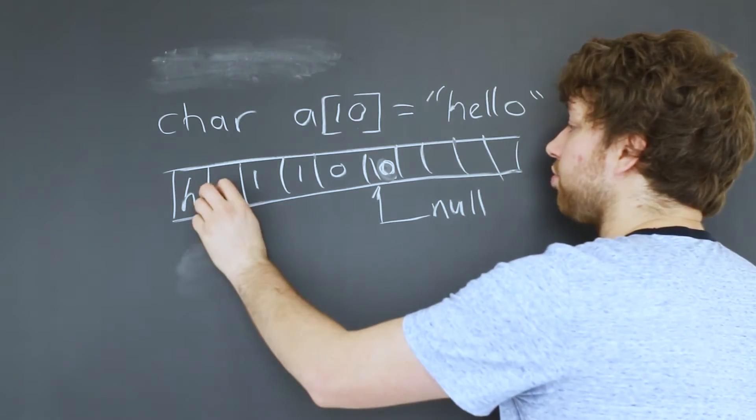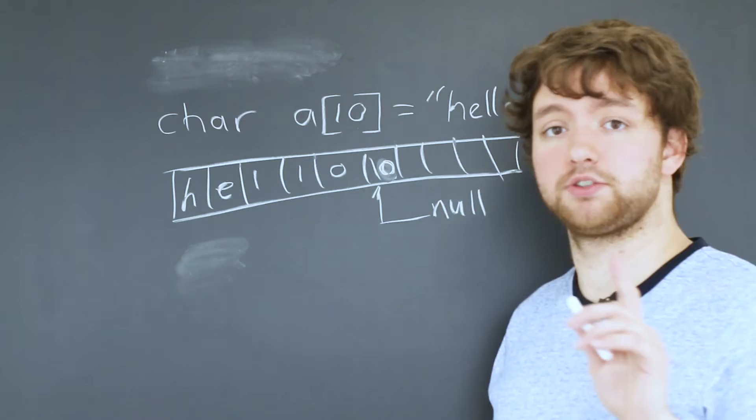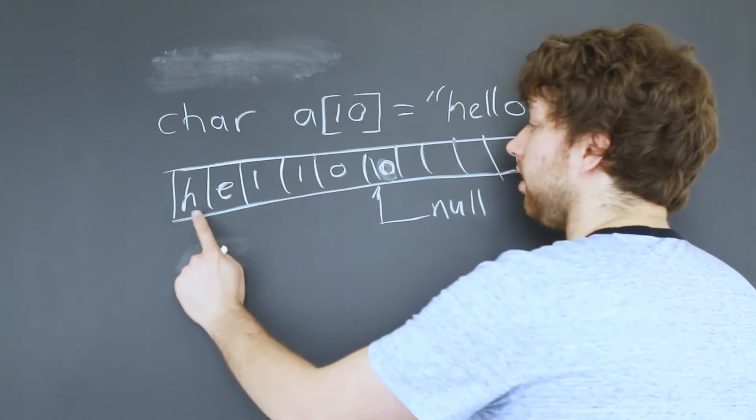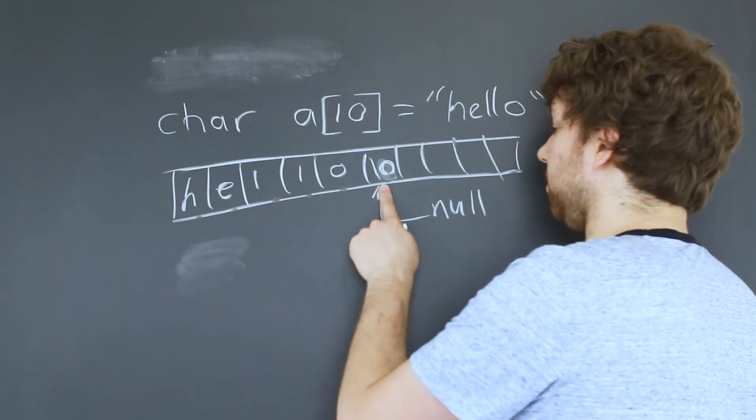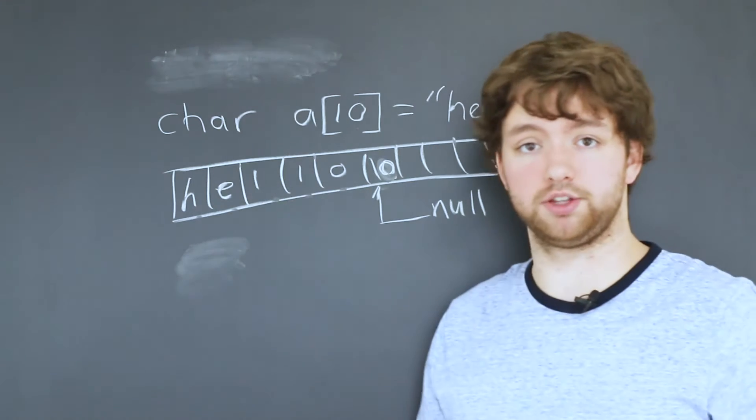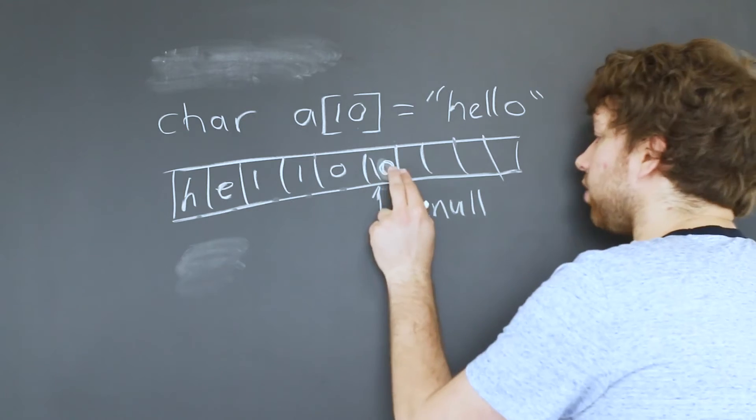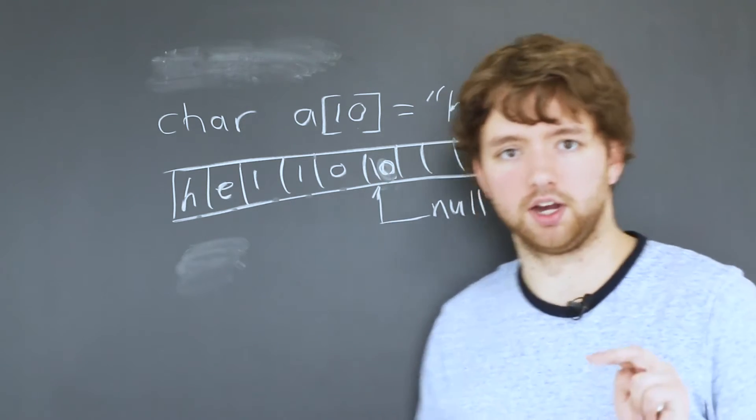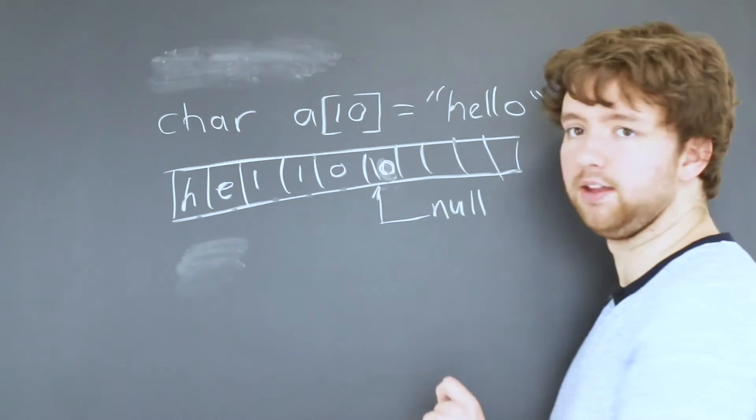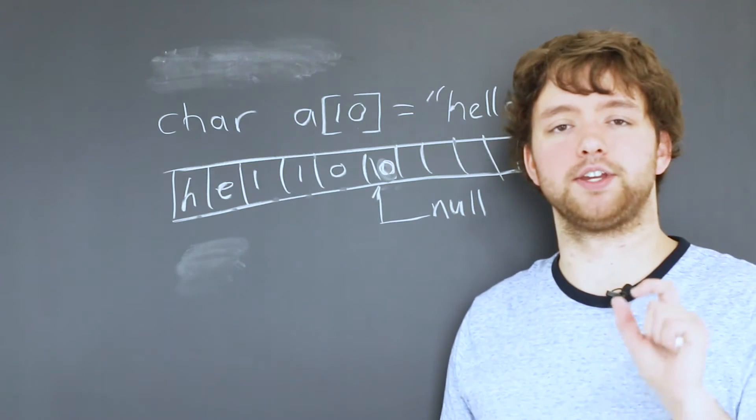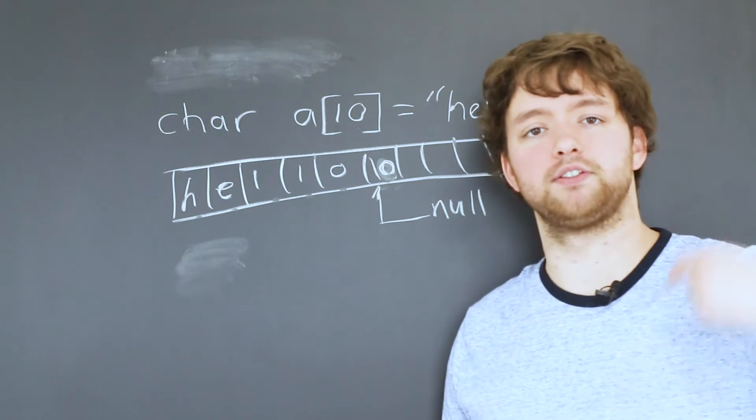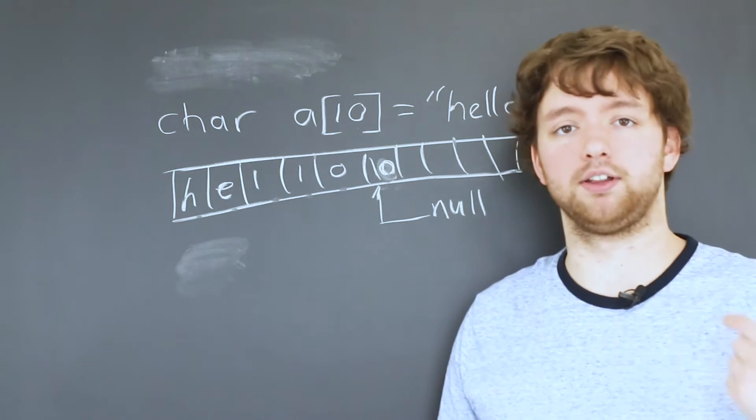So if any function was to go through this string one character at a time, it would go through it. It would hit that null character and it would know that the string is done and to not go forward. This is like super important because if you don't have that there, there's high chances that you're going to be going into areas of memory that you're actually not allowed to access.